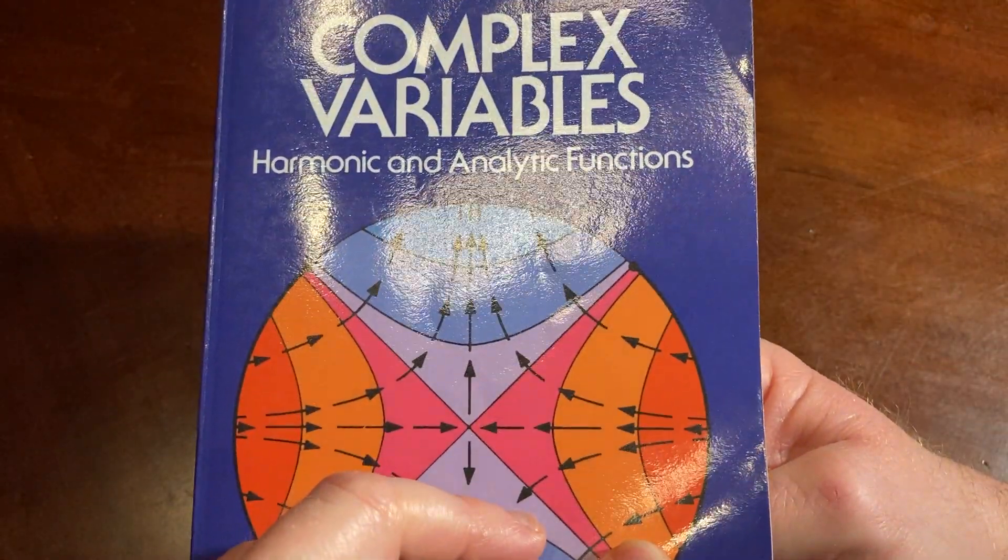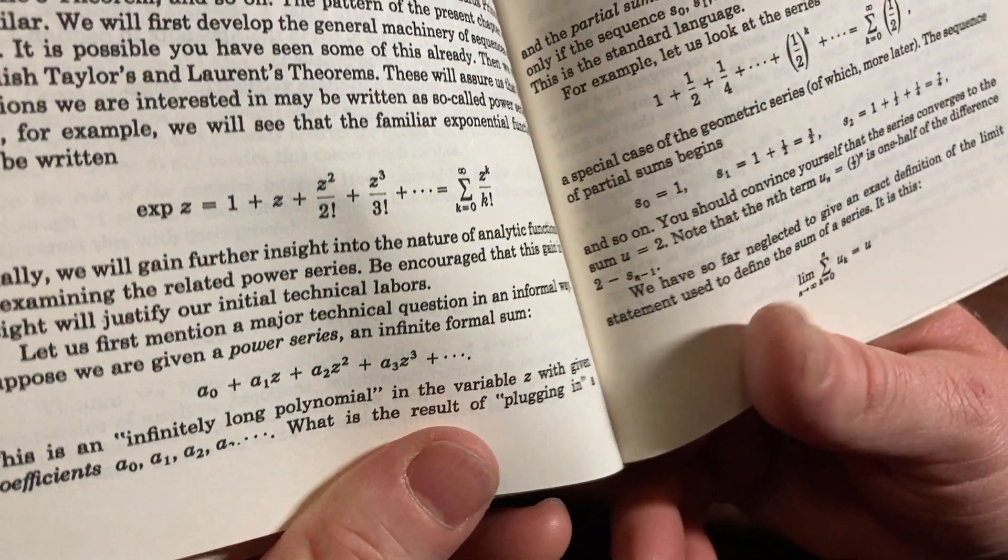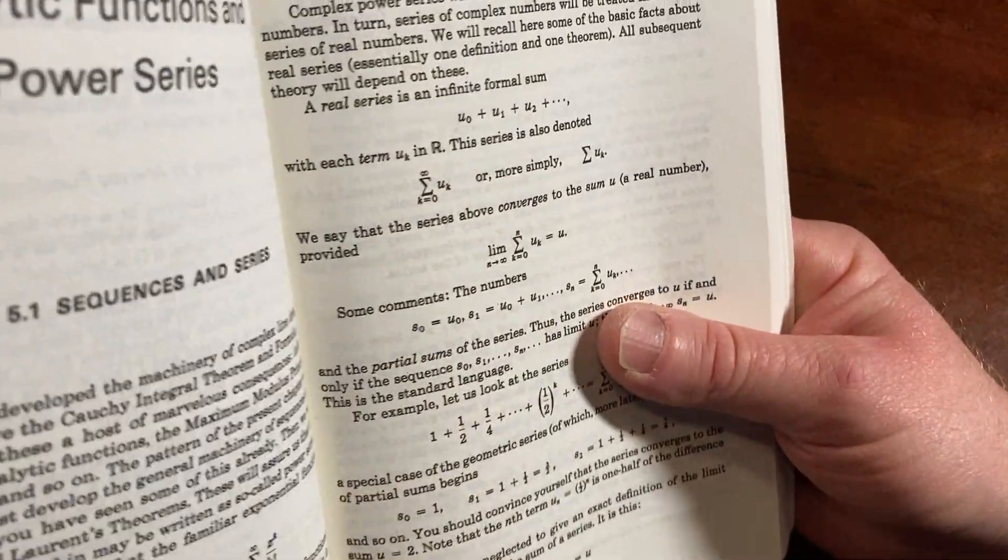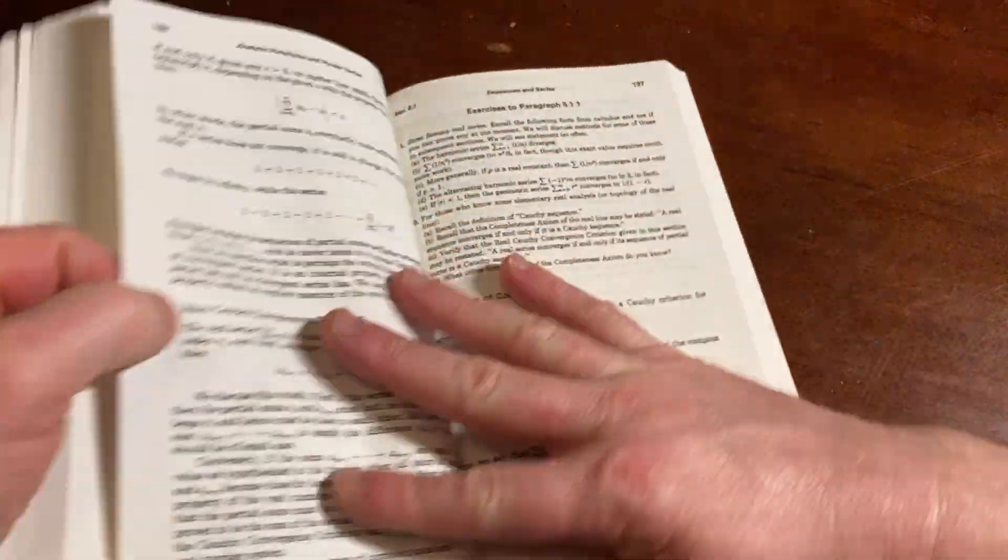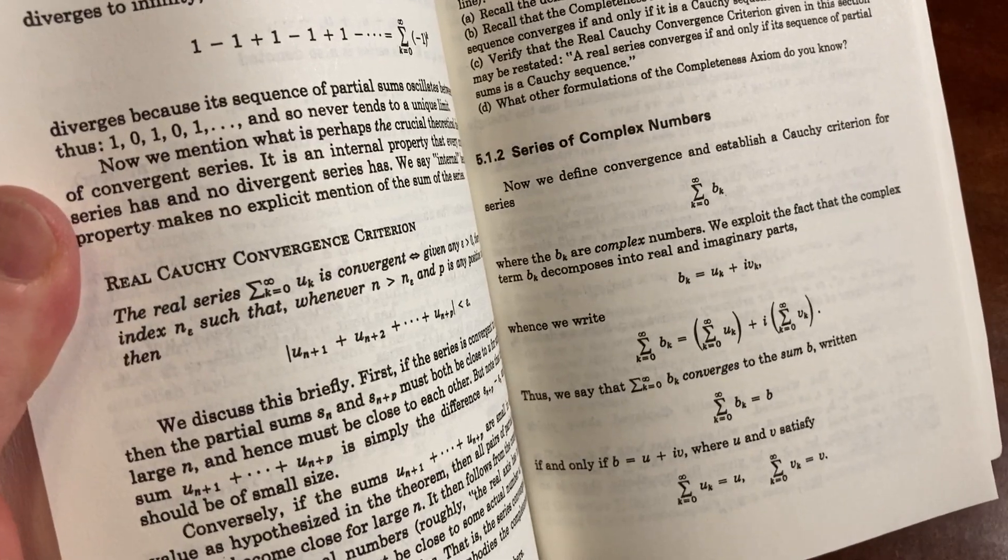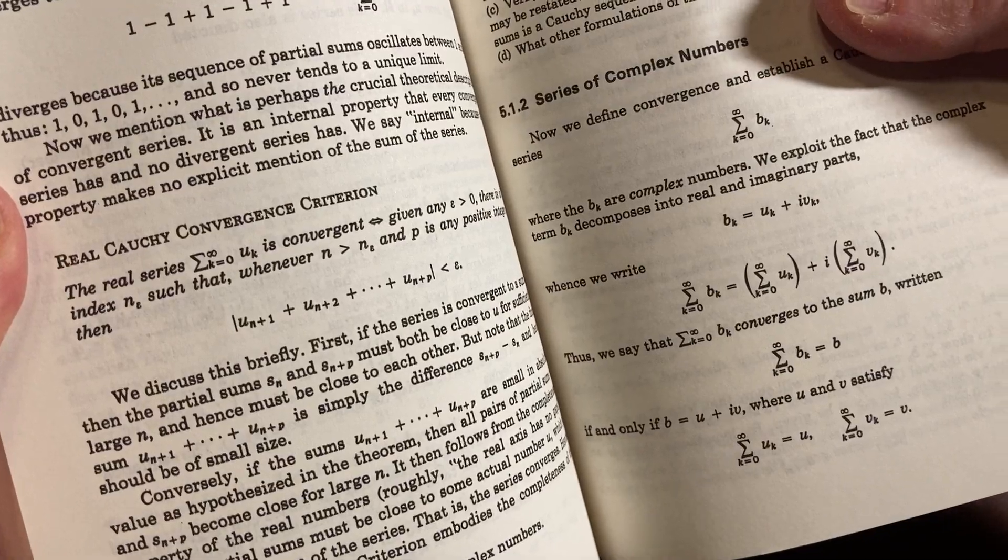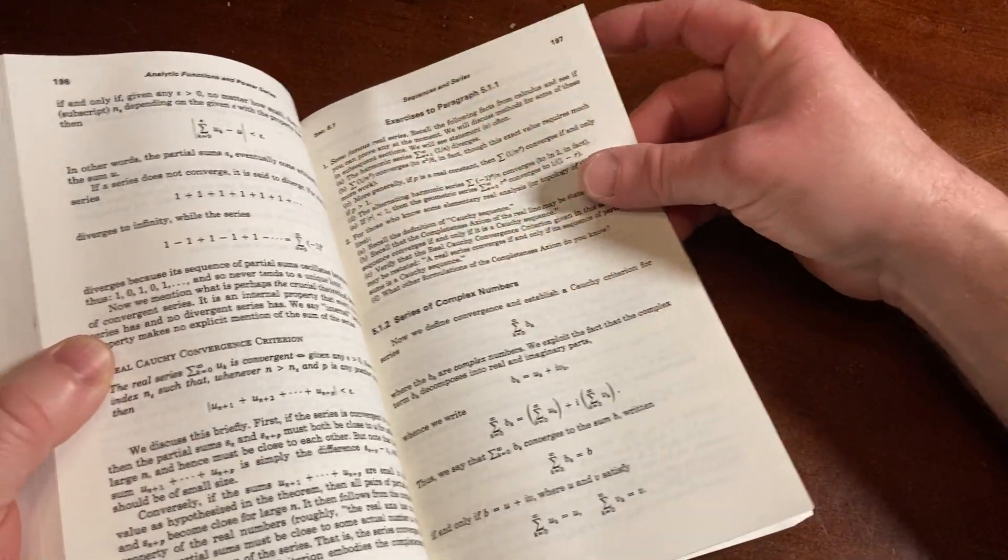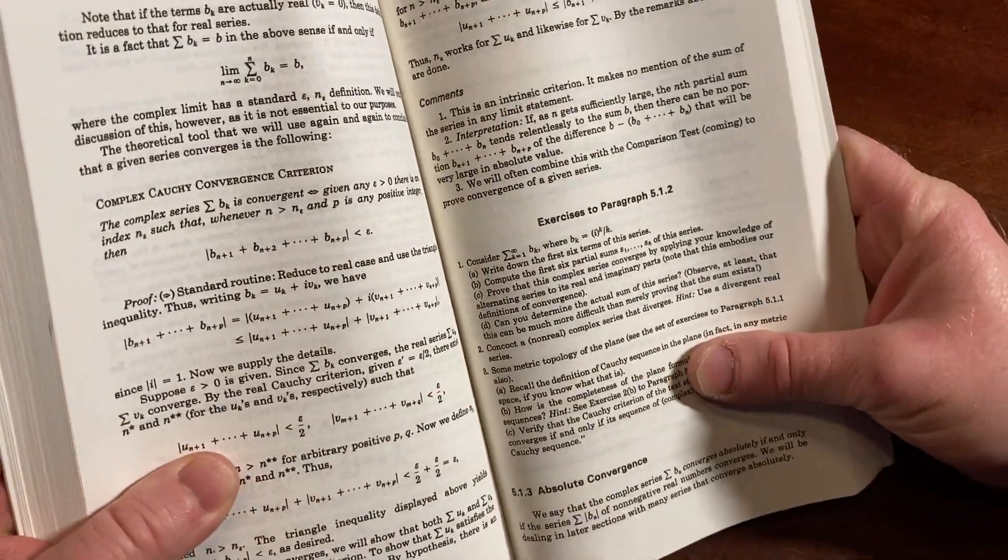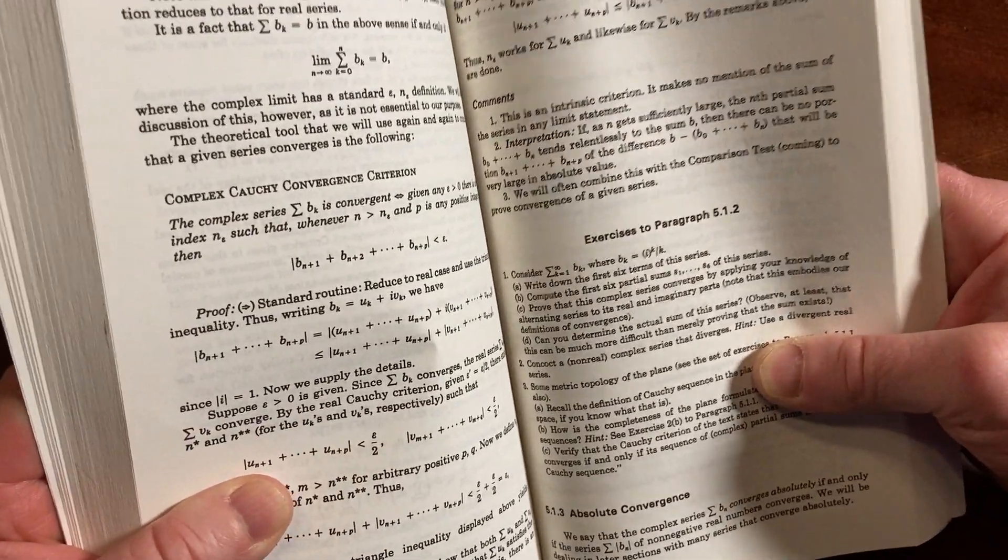Hence, complex variables. Harmonic and analytic functions. That's the name of the book. So, we have a power series, an infinitely long polynomial, they say. Then here, we have series of real numbers. So, this is all stuff that's pretty basic. I think if you've had some calculus, and then here's the real Cauchy Convergence Criterion. I'm going to talk about series of complex numbers, and a lot of the same series tests that you learn in a Calc 2 class, you can apply to series here.